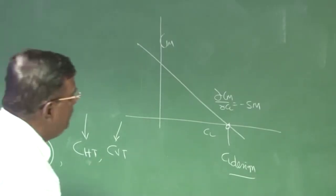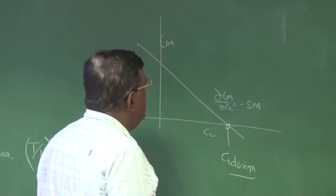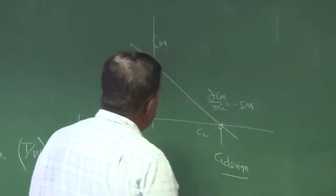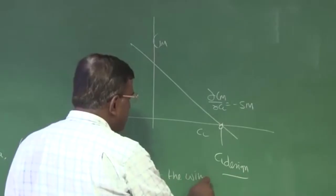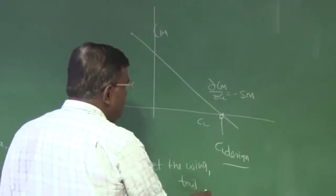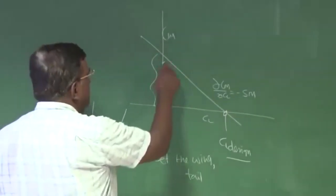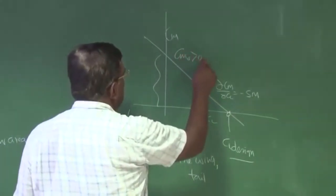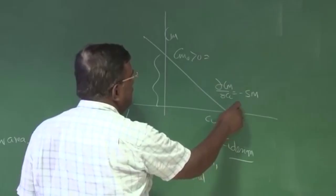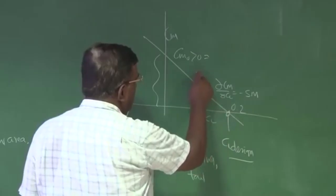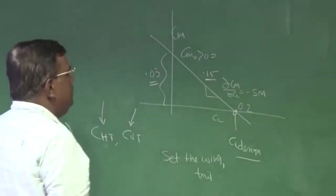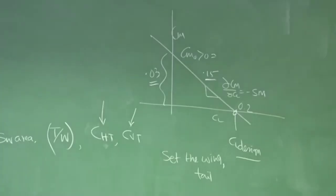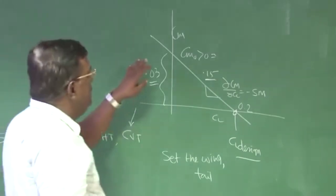Once I do that, then we were looking for how do I set the wing and tail so that these two conditions are met: one is CM0 greater than 0, which is a particular number. If this is 0.2 and this slope is 0.15 (15% static margin), then this value becomes 0.03. And the question we addressed was: how do I locate wing and tail, what is the tail setting angle, how do I find it so that CM0 is satisfied?